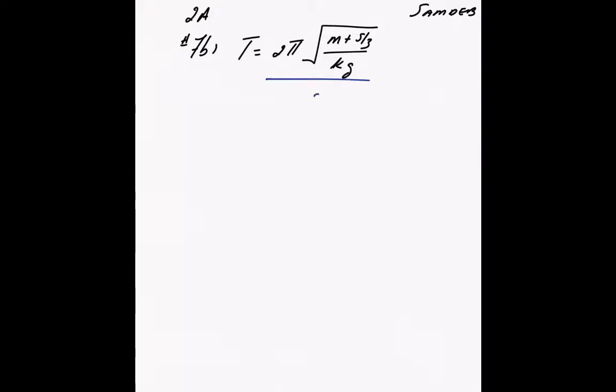We'll start off by dividing both sides by 2 pi. 2 pi divided by 2 pi is 1. t over 2 pi is equal to root m plus s over 3 divided by kg.